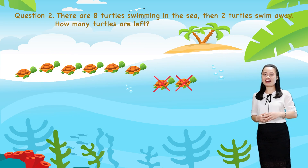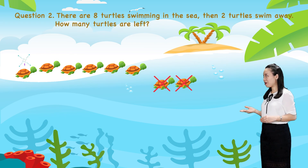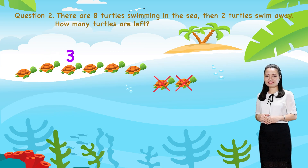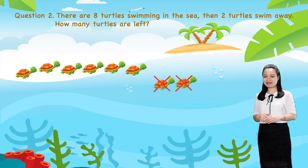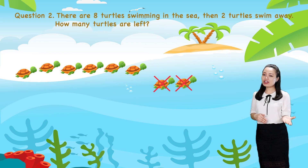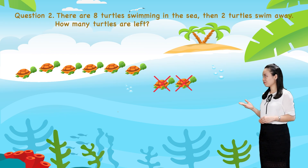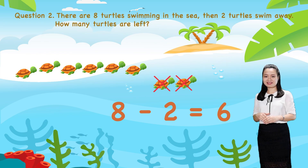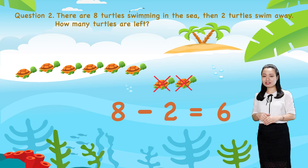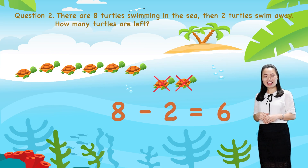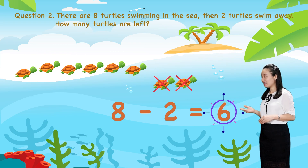Let's find the answer together. Let's count. One, two, three, four, five, six. So, six turtles are left. We write in numerals. We say, eight minus two equals six. Here, six is the difference.